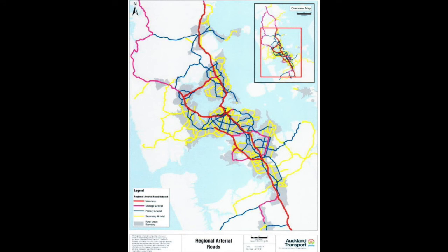These classifications were then broken down into: arterials, non-arterials, motorways, collectors or connectors, roads, strategic arterials, local streets, primary arterials, lanes and service lanes, secondary arterials, shared space, and shared zones. This classification system will help Auckland Transport further plan and develop the transportation network for the years to come.